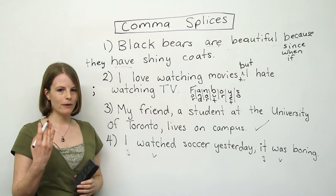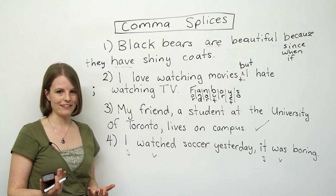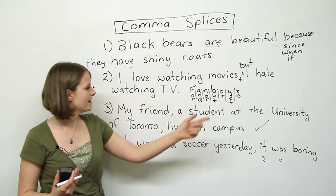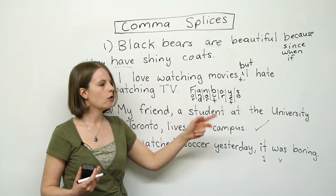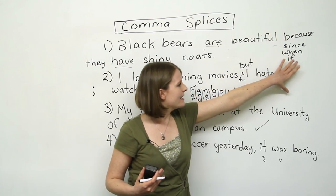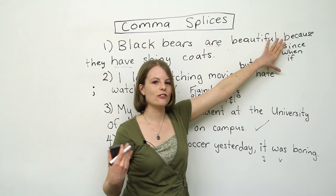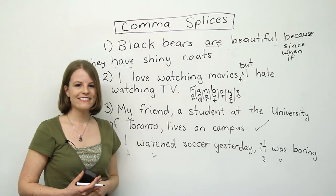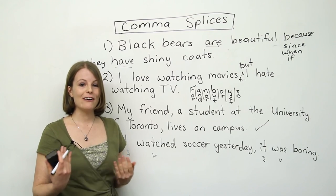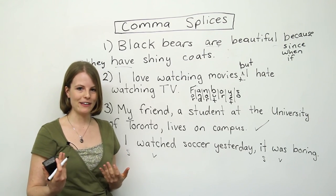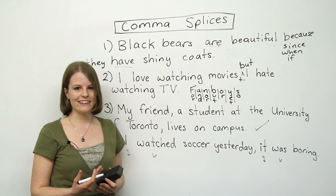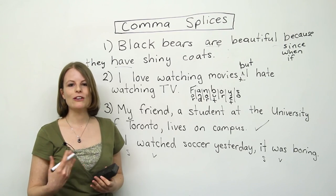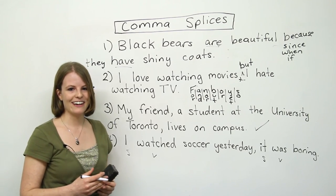So to summarize, there are four ways to deal with comma splices: use a period, use a semi-colon, use one of the FANBOYS coordinating conjunctions, or make the second part of the sentence into a dependent clause using because, since, when, or if. Thank you for watching. For more practice with comma splices, please visit us at www.engvid.com where you can take our test. Take care until next time.